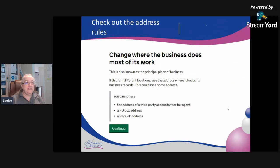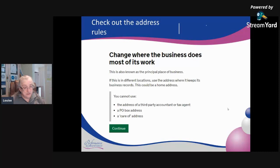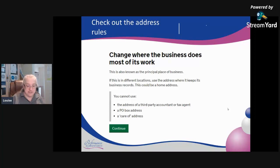What you need to look at are the rules behind the principal place of business. You won't be able to put a PO box on it, and you're not supposed to put the address of a third party — so an agent or an accountant. It will need to be a proper address.